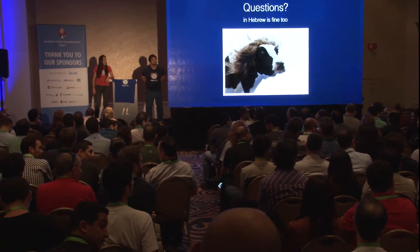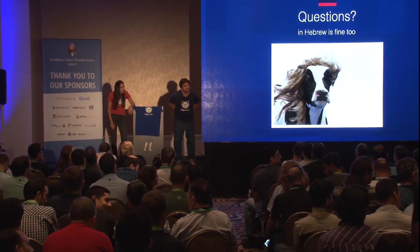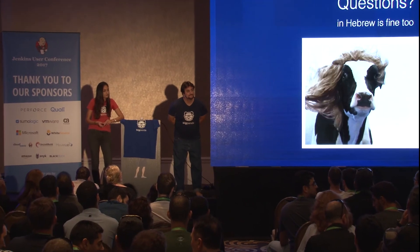A question about database images: how do you make sure you don't have to update the database image all the time whenever you add new tables? The question was how we deal with database migration or creating new tables if we need to prepare Docker images with that already set up. We work with MongoDB, and everything is created once the process is up, so we don't have those problems specifically.